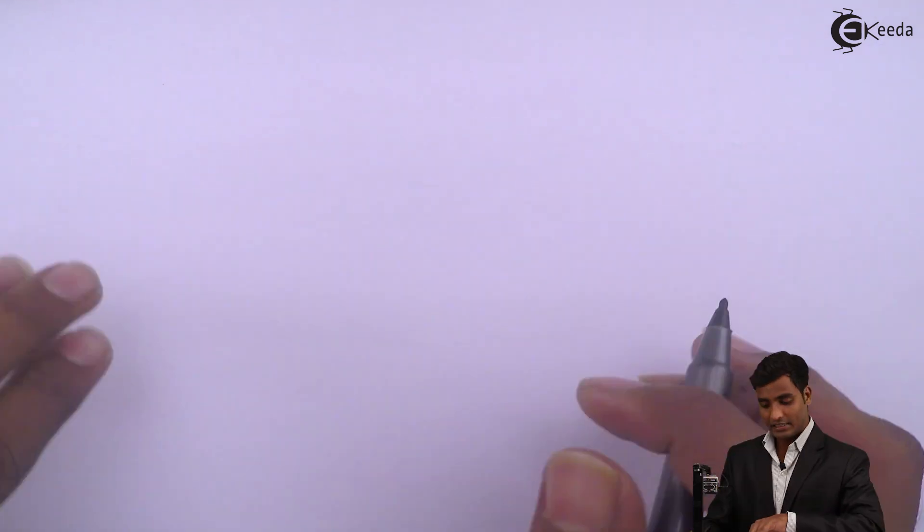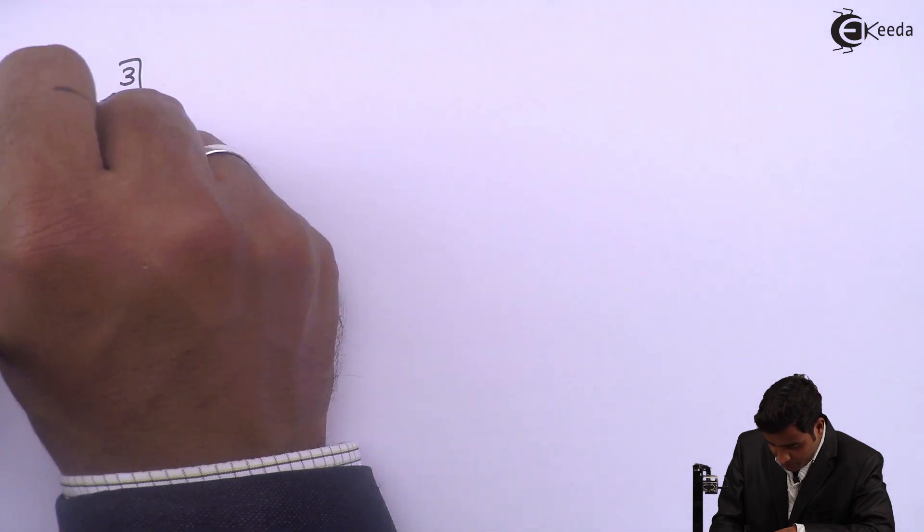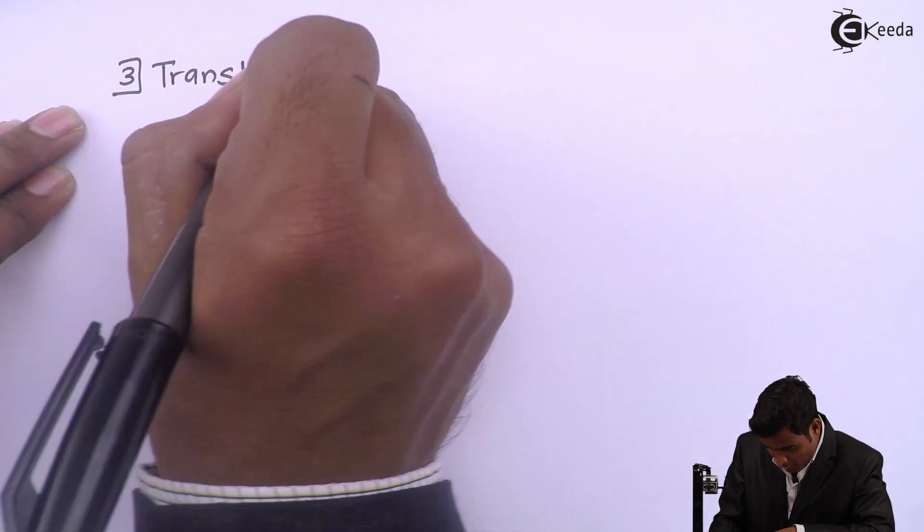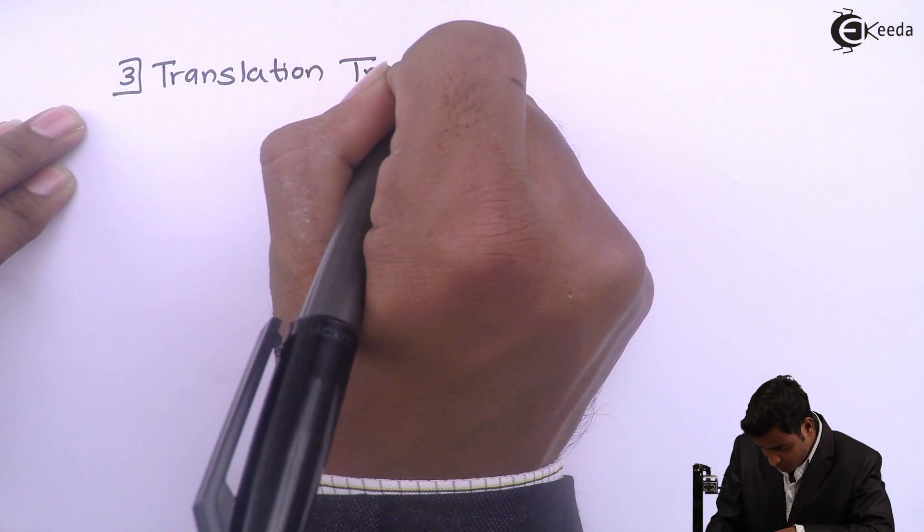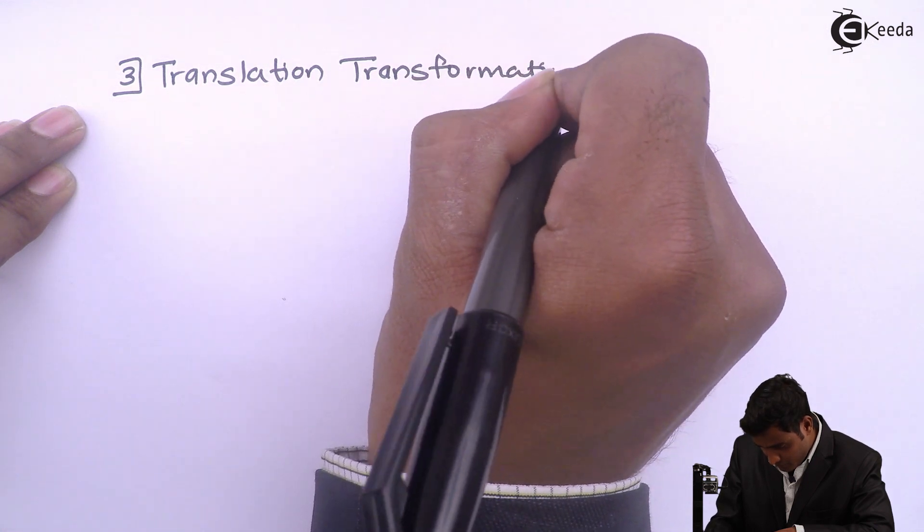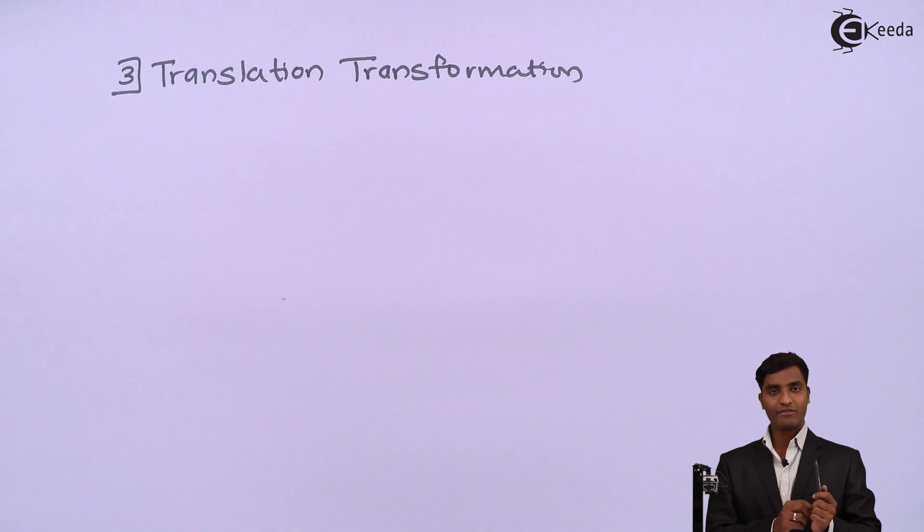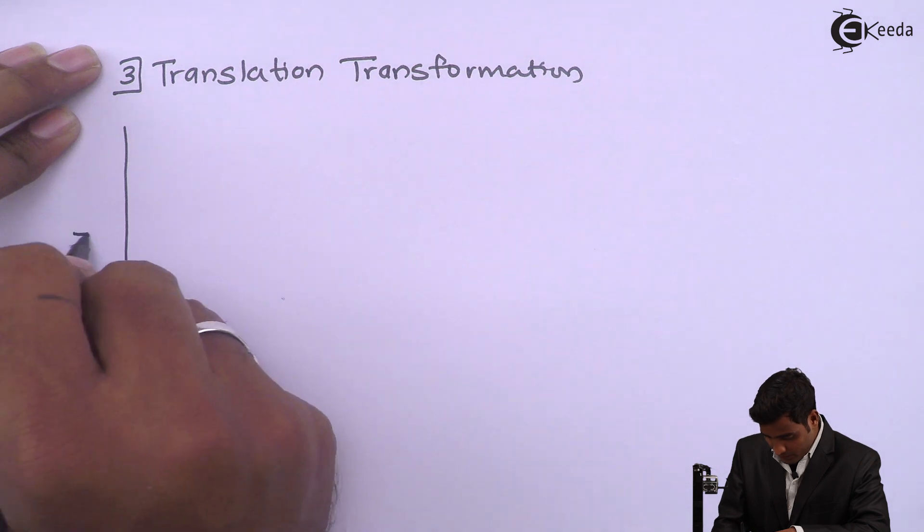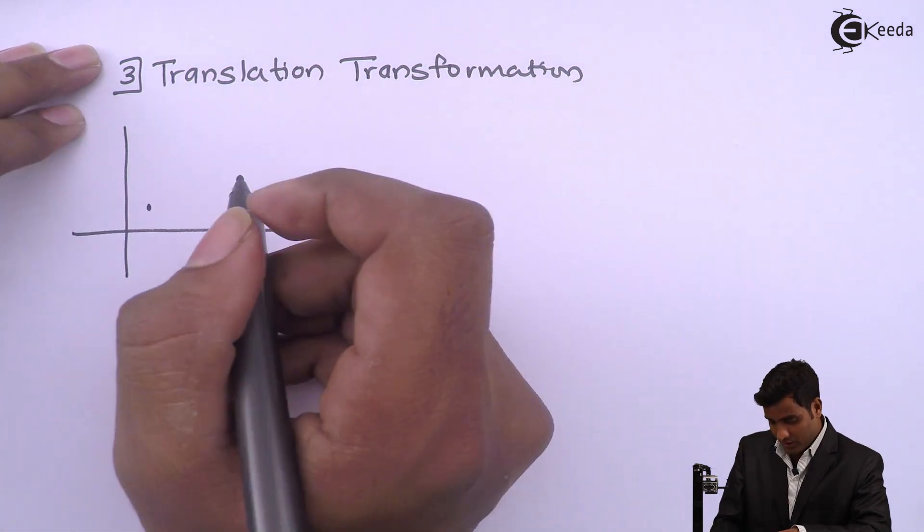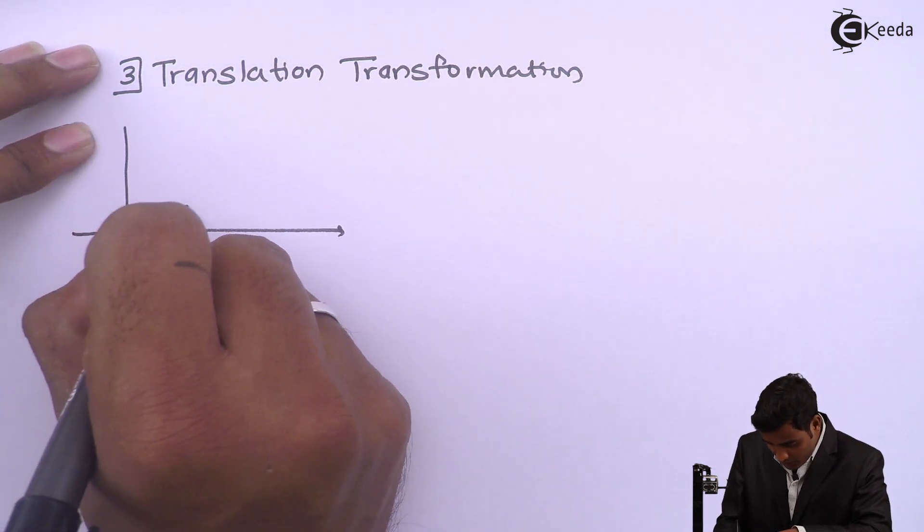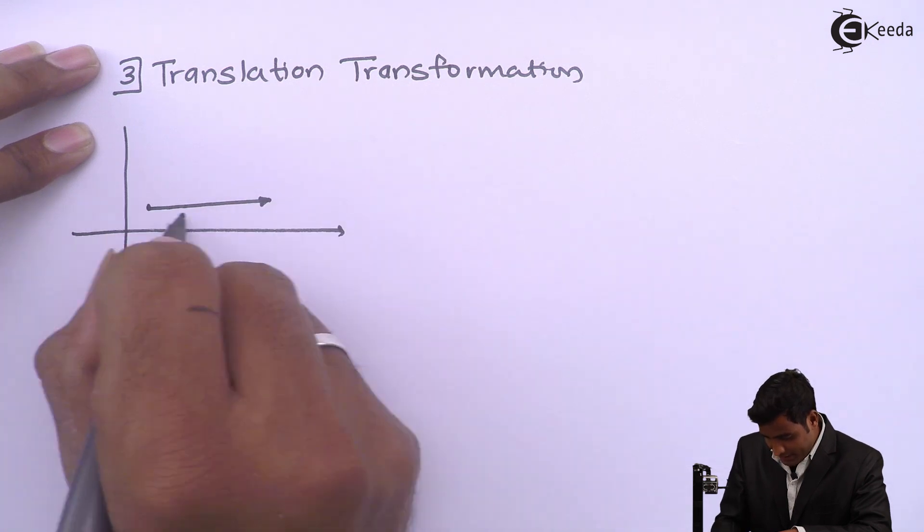Now third and last one is translation transformation. In translation means moving from one point to another linearly means if we consider a point we will move Tx.